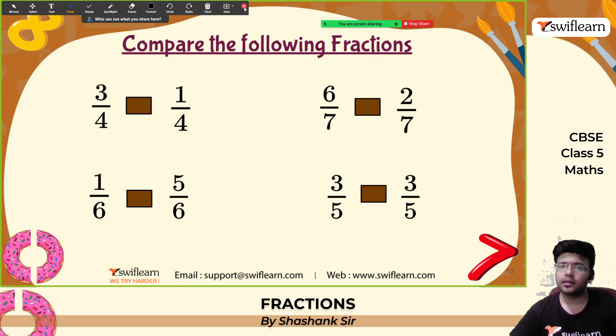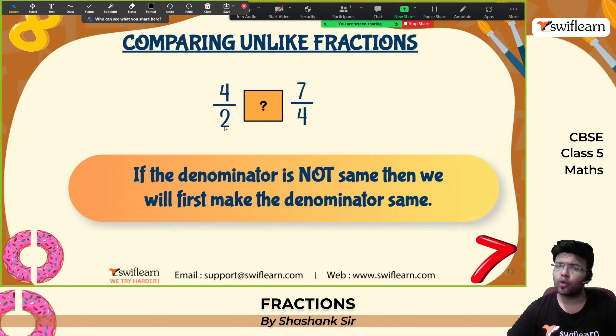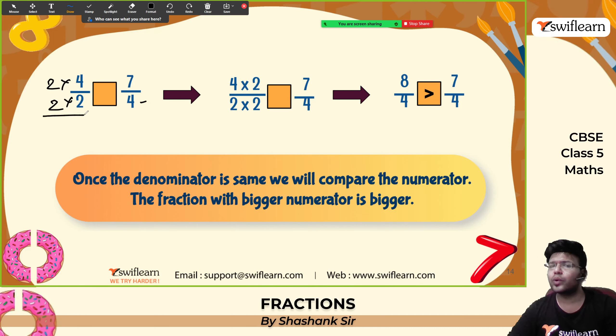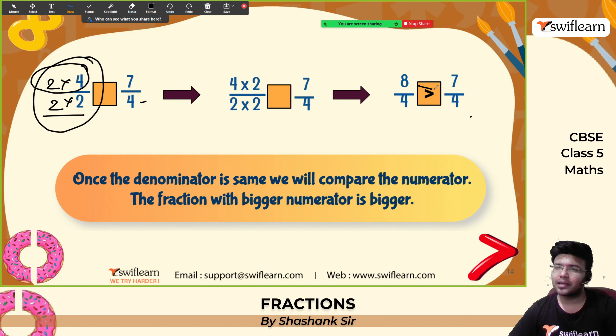Now, how to compare unlike fractions when the denominators are different? Make the denominators the same using the concept of equivalent fractions. For example: 4 by 2 and 7 by 4. The LCM of 2 and 4 is 4. This denominator is already 4, so multiply 4 by 2 to get 8. The equivalent fraction is 8 by 4. Now comparing 8 by 4 and 7 by 4: 8 is greater, so 8 by 4 is greater, which implies 4 by 2 is greater than 7 by 4.